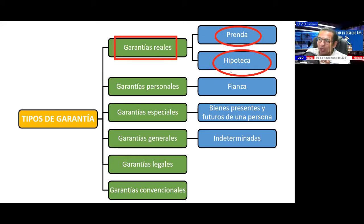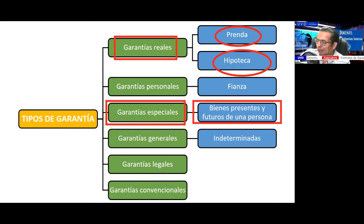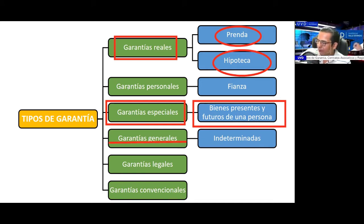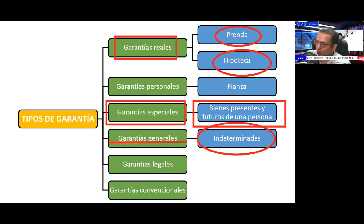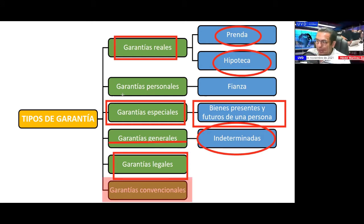In the fianza, a personal guarantee, the person who enters this contract commits to the creditor to pay in case of default by the principal debtor. Special guarantees are established over present and future assets. General guarantees are indeterminate. Legal guarantees are perfectly determined and recognized in the norm, while conventional guarantees are those the parties have agreed upon in the celebration of a contract.